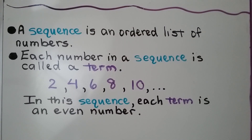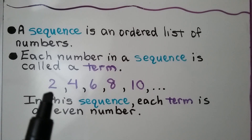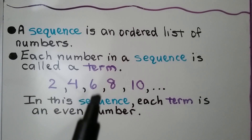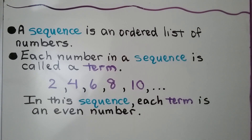A sequence is an ordered list of numbers. Each number in a sequence is called a term. In this sequence, each term is an even number. We have 2, 4, 6, 8, 10. They're all even numbers.